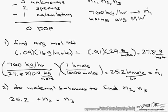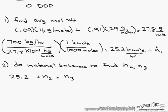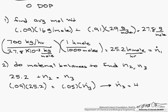So the methane balance: there is 9% methane in the 25.2 kilomoles coming in, and there is 5% of methane in N3. So that allows us to easily solve for N3. So our N3 equals 45.4 kilomoles per hour, and now N2 equals 20.2 kilomoles per hour.